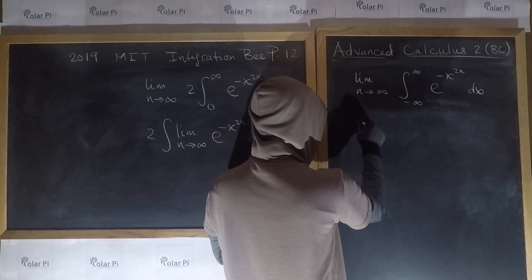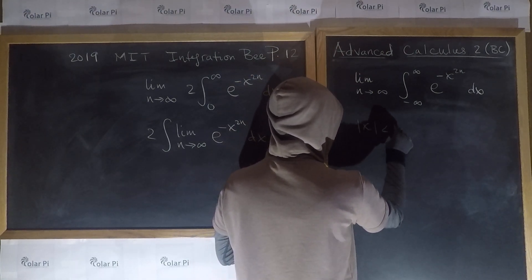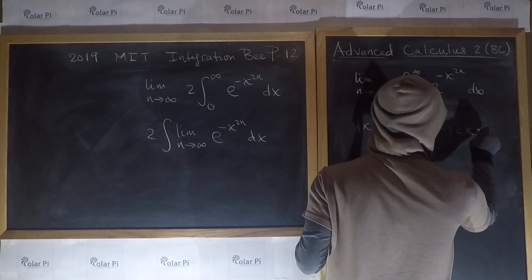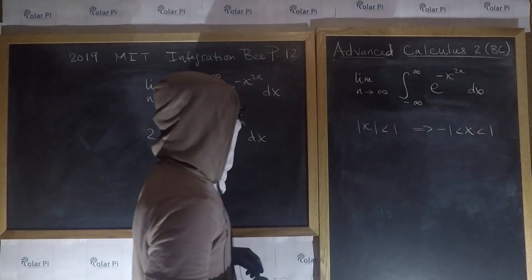The first is when the absolute value of x is less than 1. Notice that absolute value of x is less than 1 amounts to negative 1 is less than x is less than 1. And so,